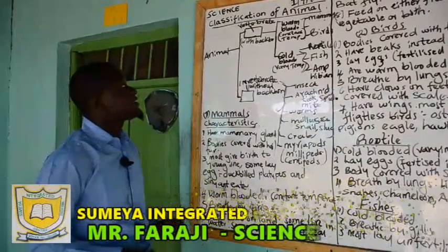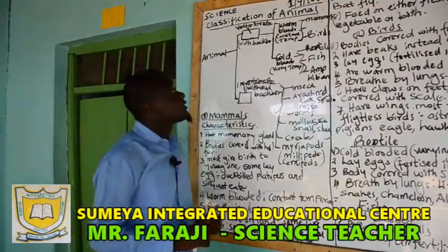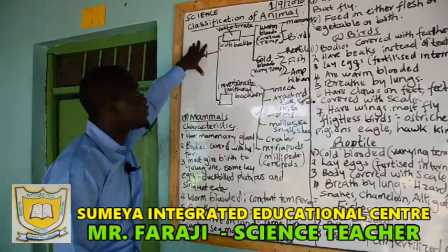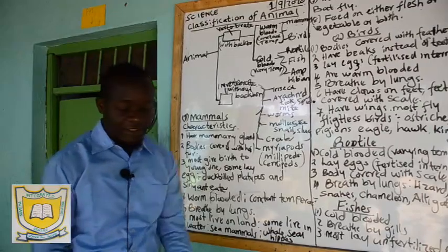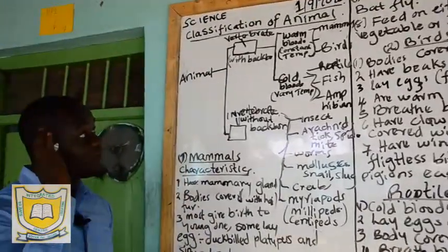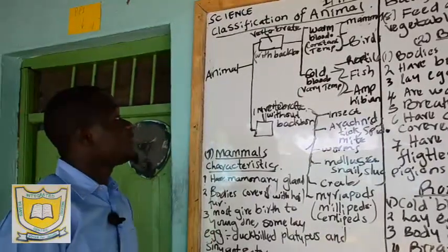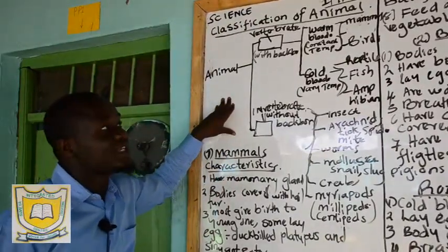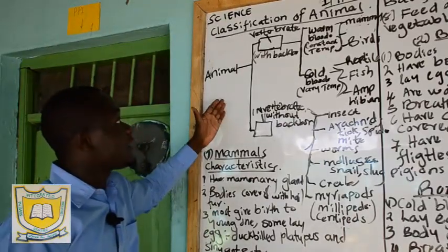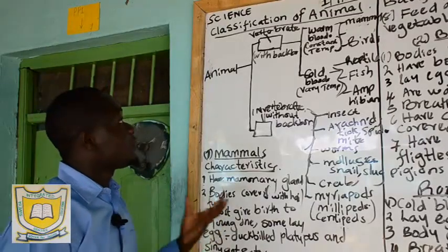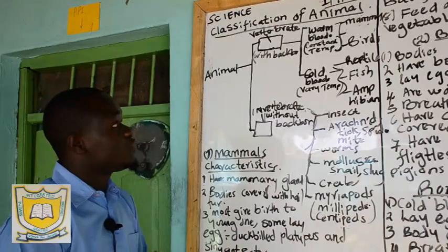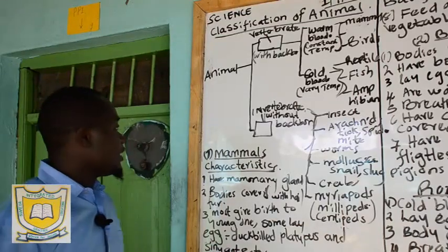Welcome to today's science lesson for Standard 8, still covering animals. Last time we introduced animals and discussed domestic and wild animals, different characteristics of animals, and classification considering products from animals — camels, cattle, different products we get from cattle, cows, sheep, and other animals.